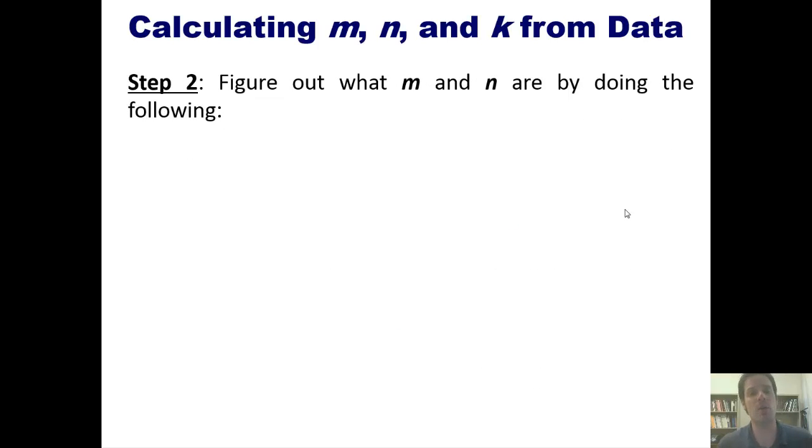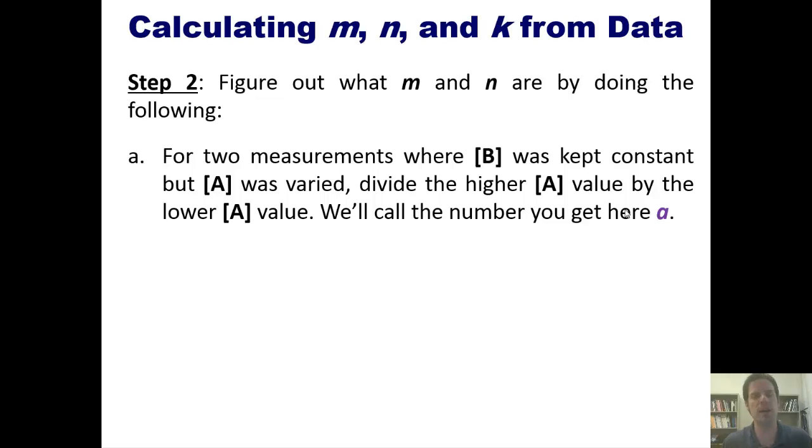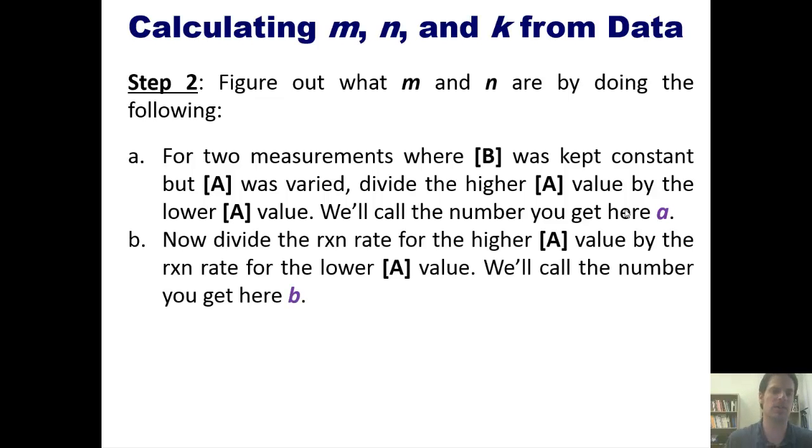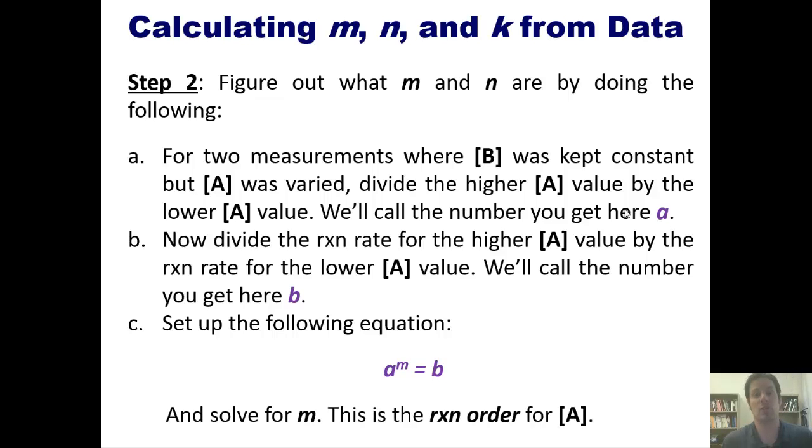Step two, figure out what M and N are by doing the following. First, for two measurements where the concentration of B is kept the same, but A is varied, divide the higher A value by the lower A value. We'll call the number you get here Purple A. Now, divide the reaction rate for higher concentration of A value by the reaction rate for the lower concentration of A value. We'll call the number you get here Purple B. Then set up the following equation. A raised to the M equals B. And then solve for M. This is the reaction order for A.